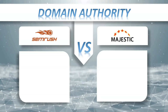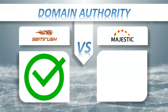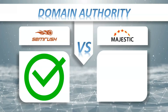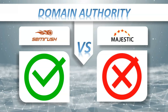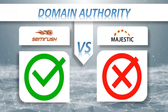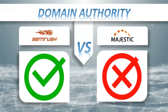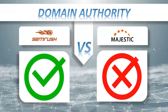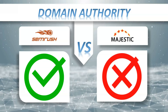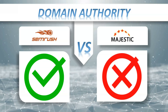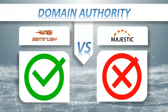Domain authority: SEMrush yes, Majestic no. The domain authority of a website describes its relevance for a specific subject area or industry. This relevance has a direct impact on its ranking by search engines, trying to assess domain authority through automated analytic algorithms.